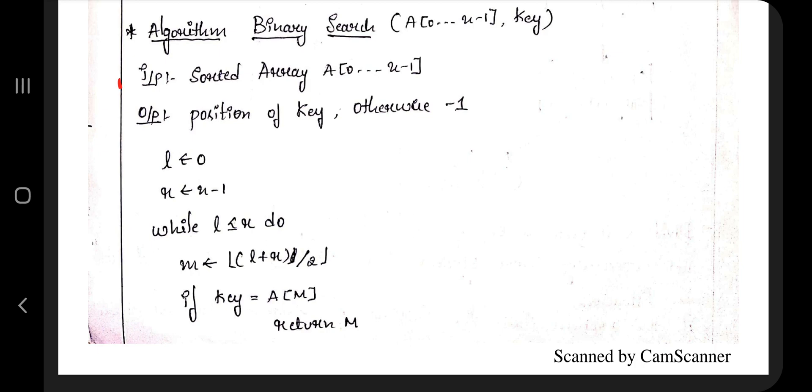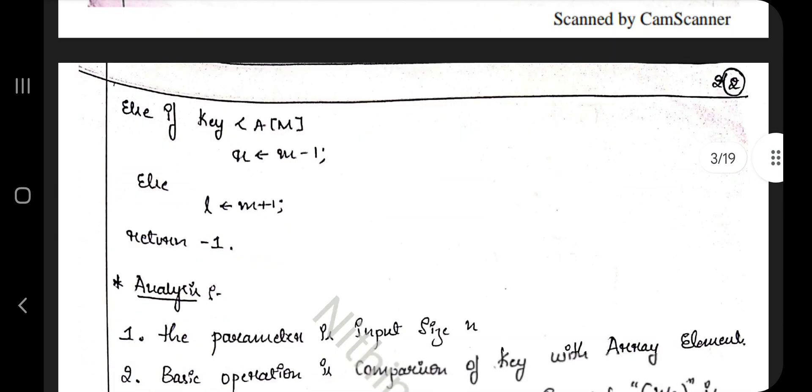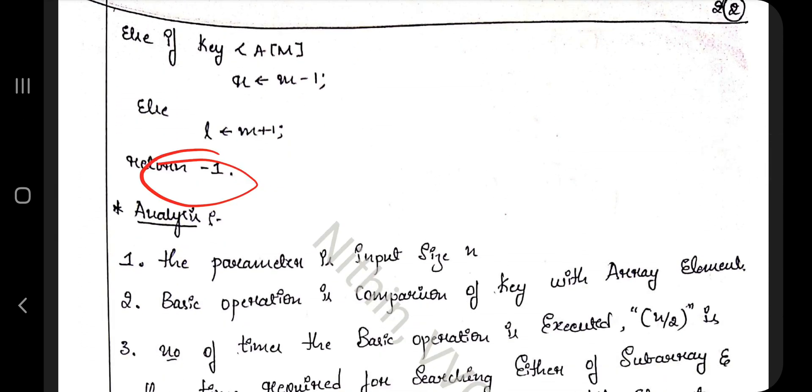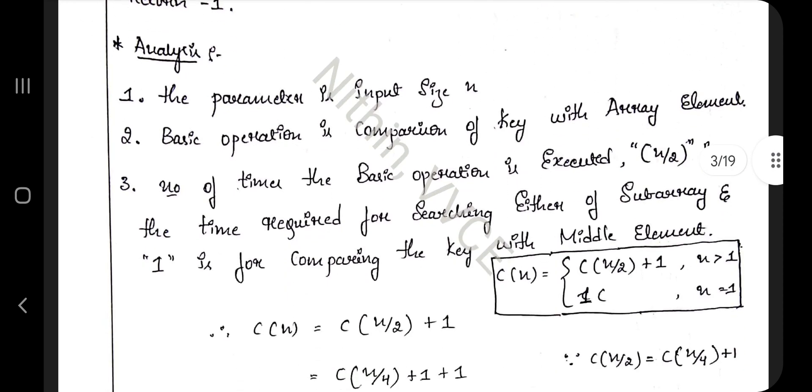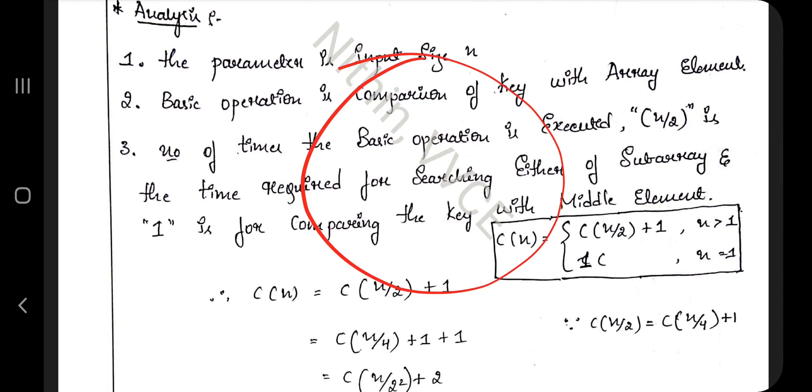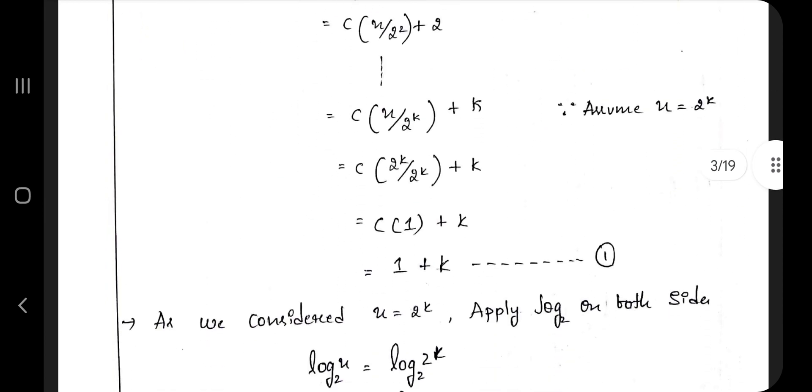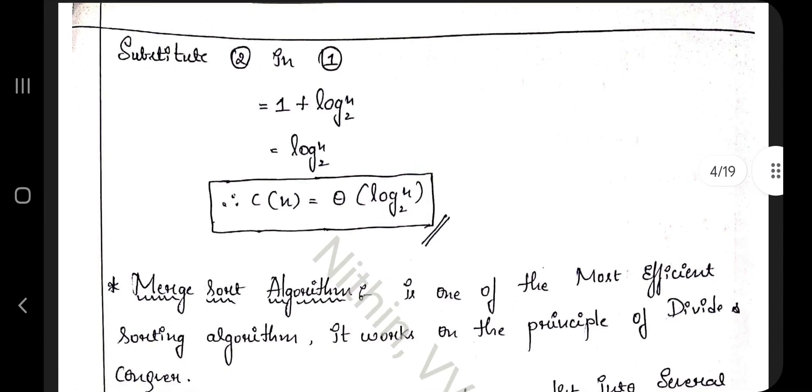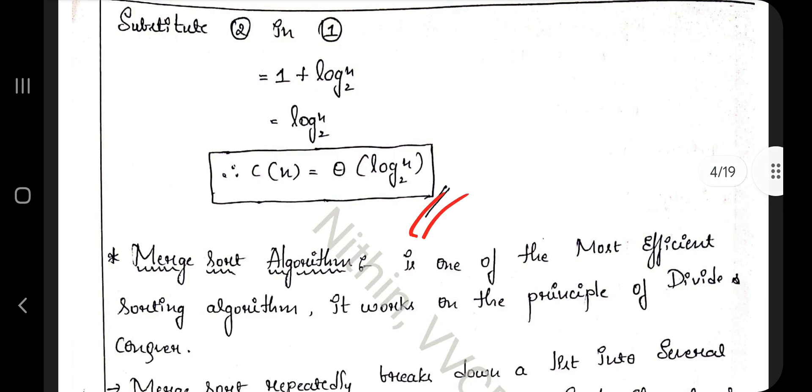You have to explain in your own words. Write what is the input, what is the output, then write line by line what's happening, and what is getting returned if it is found or not found. Time complexity - it's optional, but if you write it will increase your chances for marks.